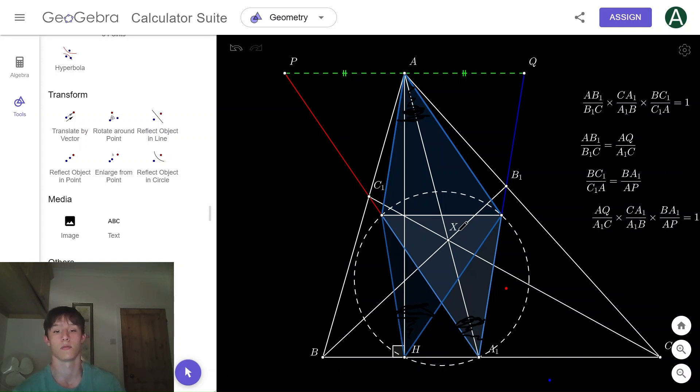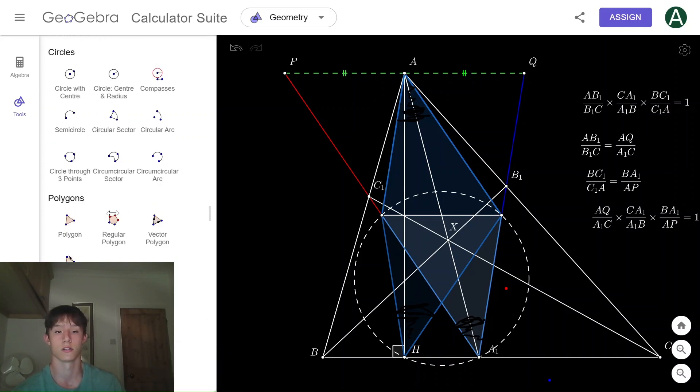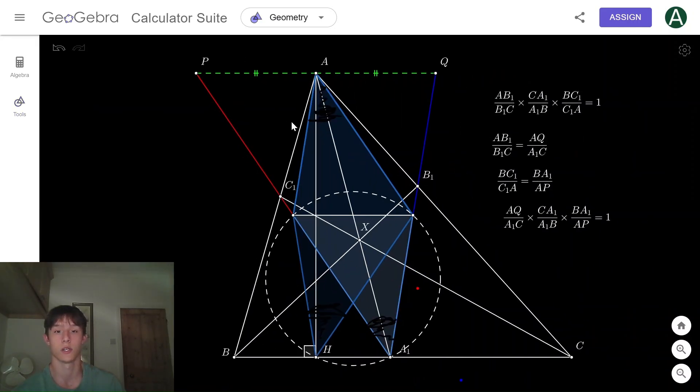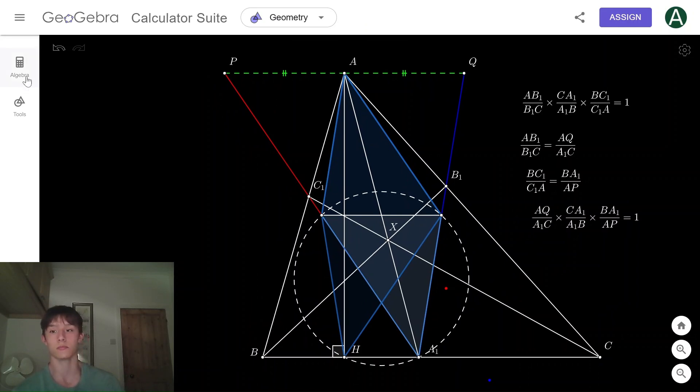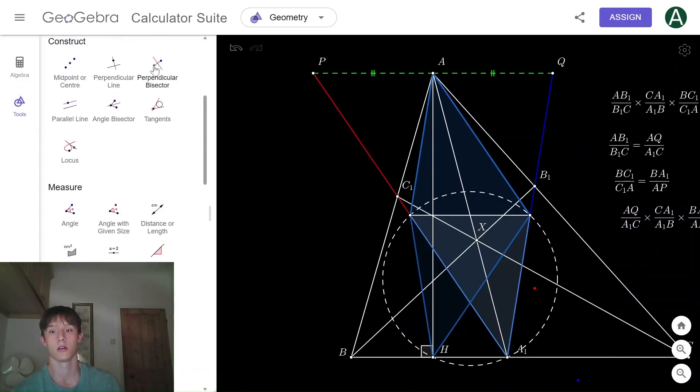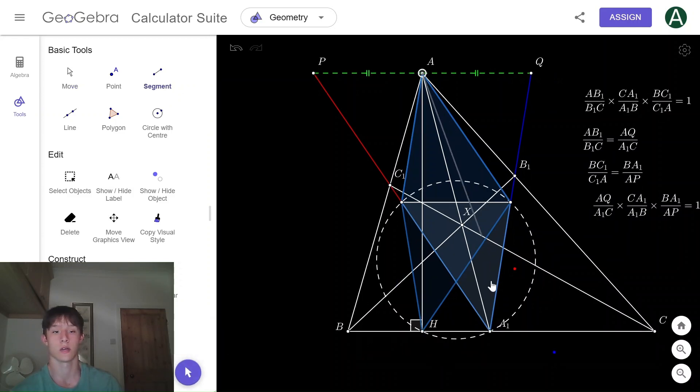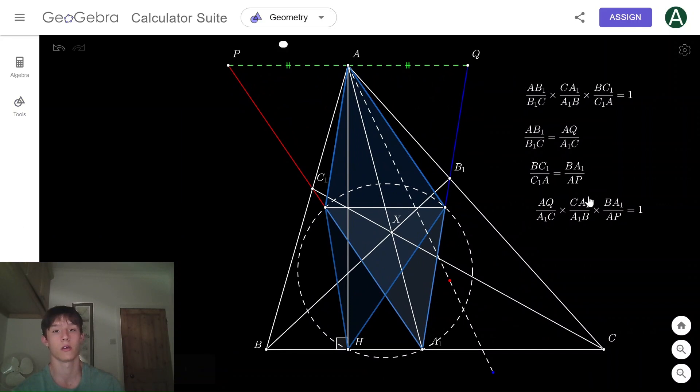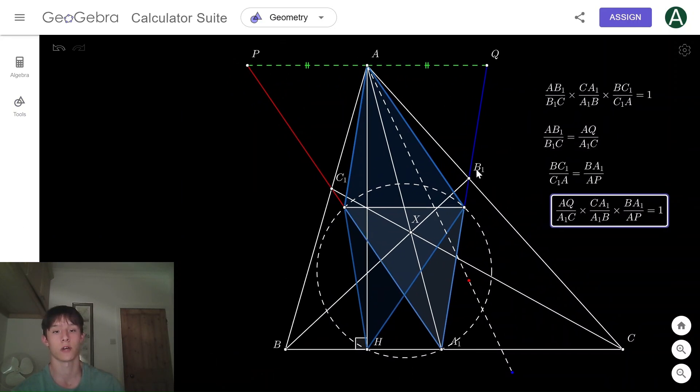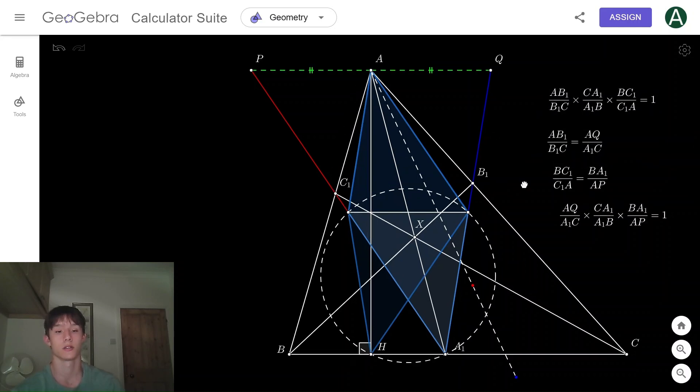So the thing that I want you to take away is the simple idea of intersecting A1P. The idea that I want you to take away is if you have height AH or lines A1C1, A1B1, you can try to do this simple trick because it does give you more information. It's usually nicer to work with PA equals AQ rather than Ceva's theorem here.